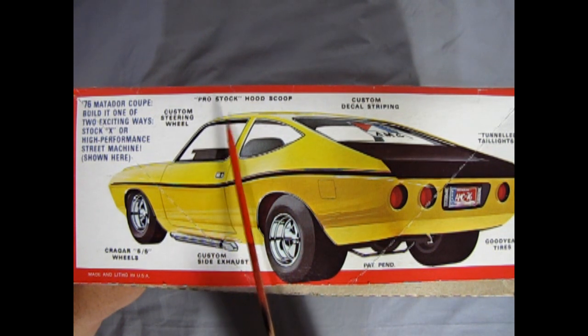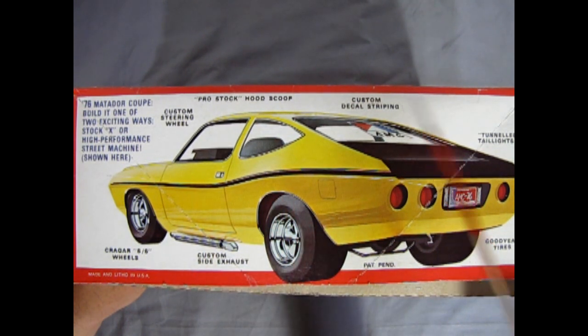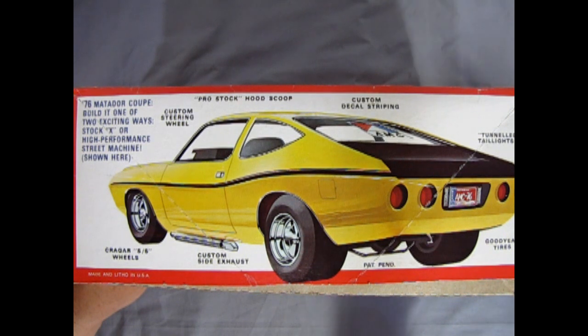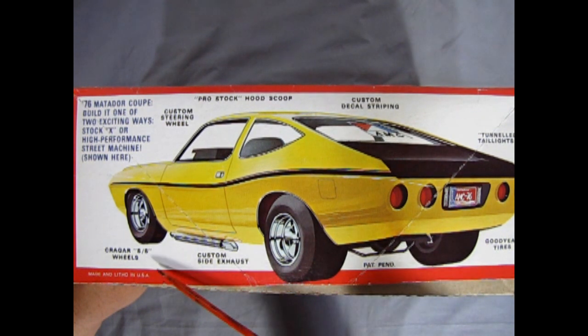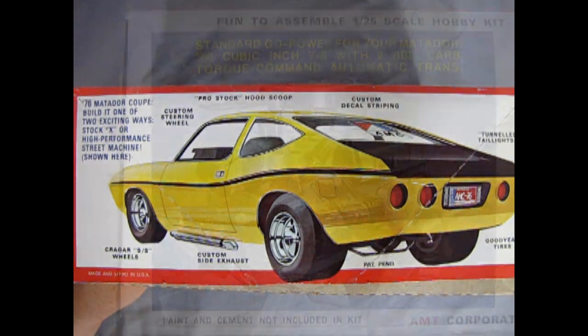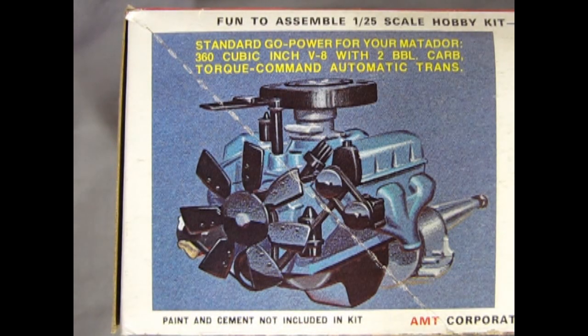Get a custom steering wheel, pro stock hood scoop, custom decal striping, tunneled taillights, Goodyear tires, custom side exhaust and Krager SS wheels. Fun to assemble 125th scale hobby kit for modelers 10 years through adulthood.